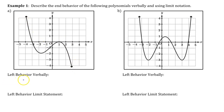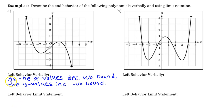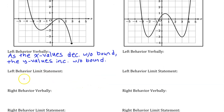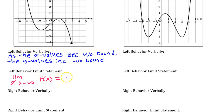Let's say that a little bit more formally in words: as the x values decrease without bound, the y values increase without bound. Using limit notation, we would say the limit as x approaches negative infinity of f of x is equal to positive infinity — it's increasing without bound.